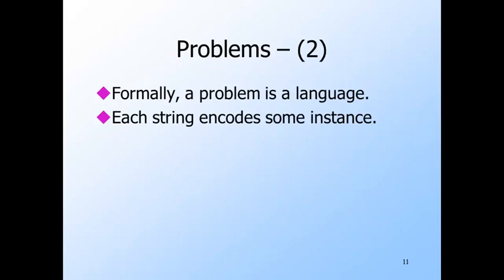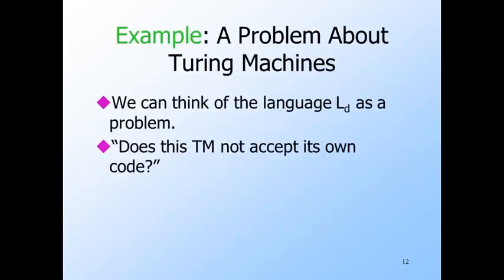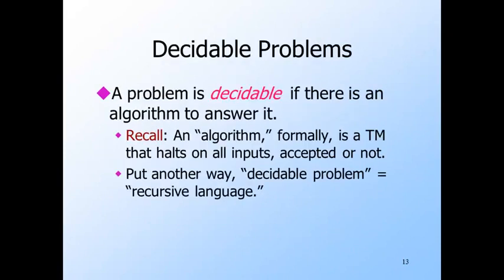So formally, a problem is simply a language over some alphabet sigma. Each string in sigma star can be viewed as an instance of the problem once we decide on an encoding for instances as strings. We already saw one such encoding when we encoded Turing machines as binary strings. It should not be hard to devise an encoding for graphs in a similar spirit. The language associated with the problem is the set of strings that code instances for which the answer is yes. Typically, our coding allows certain strings that are flawed — they don't really represent an instance — and we'll always assume that flawed encodings represent instances for which the answer is no. When we talk about problems, we use the term decidable, meaning there is an algorithm to answer the question — a Turing machine that accepts encoded instances for which the answer is yes, and also halts without accepting the other instances. So a decidable problem is really the same thing as a recursive language.